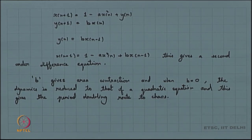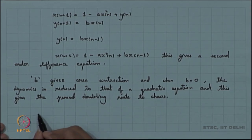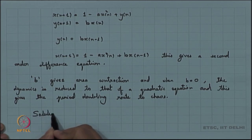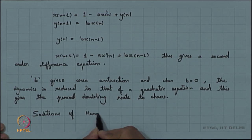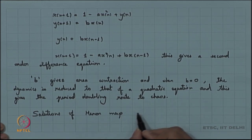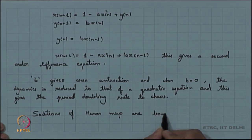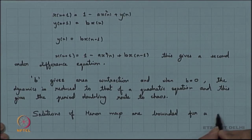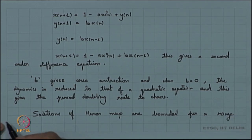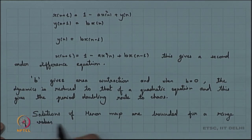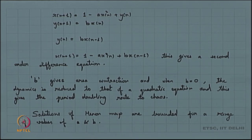What is observed to date is that the solutions of the Hennon map are bounded, and they can be studied for a range of values of a and b. These are computer experiments where people have found that for certain values of a and b, the attractors remain bounded. Still, the theory is not completely studied, and there are many things still open.